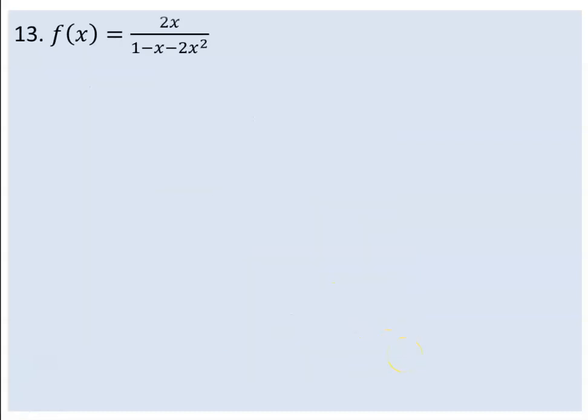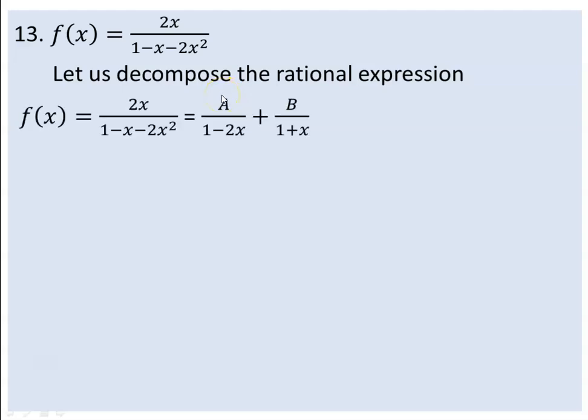For f(x) equals 2x over 1 minus x minus 2x squared, we can decompose the rational expression. We can decompose it as A over 1 minus 2x plus B over 1 plus x.